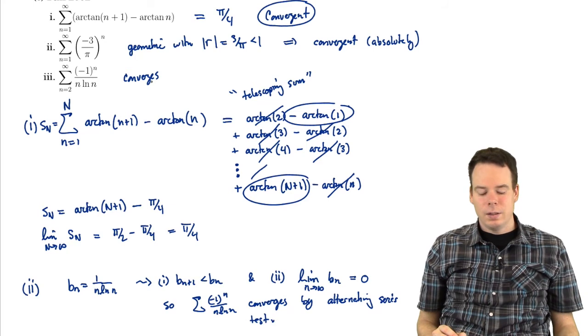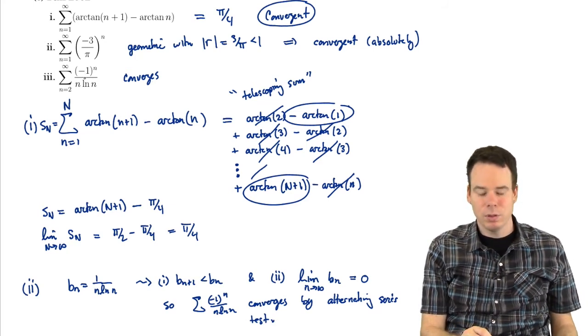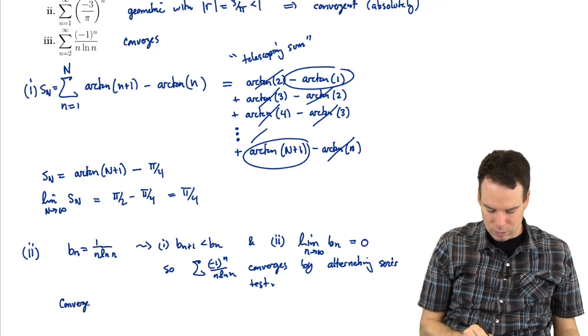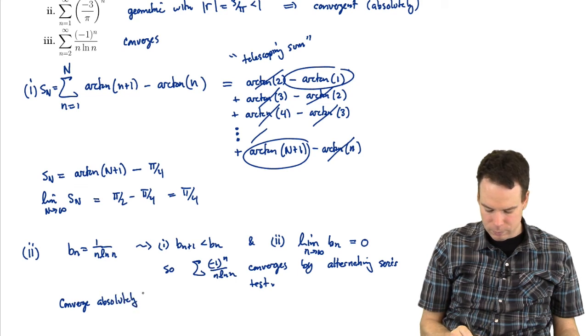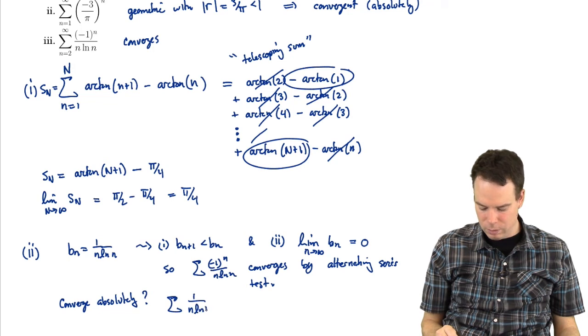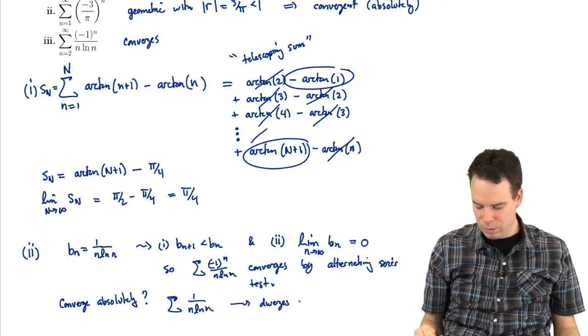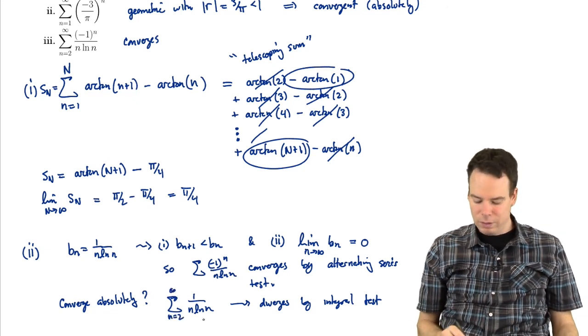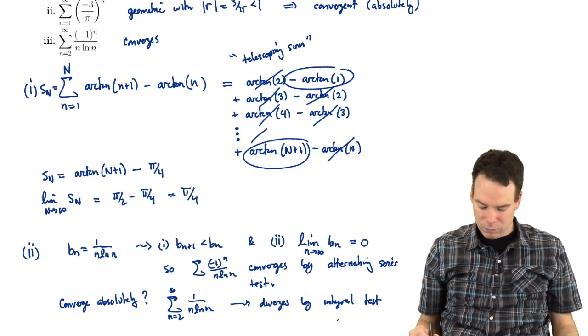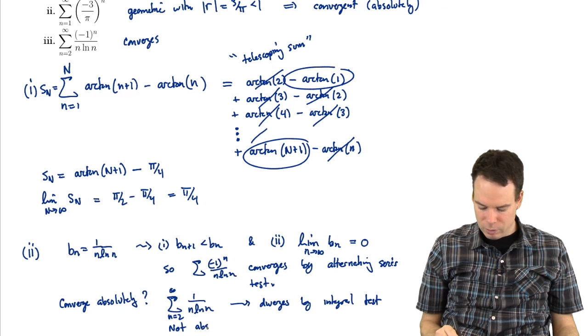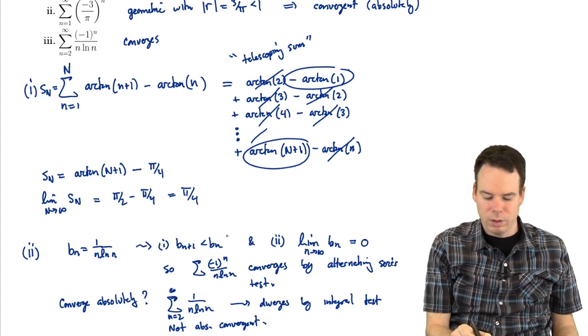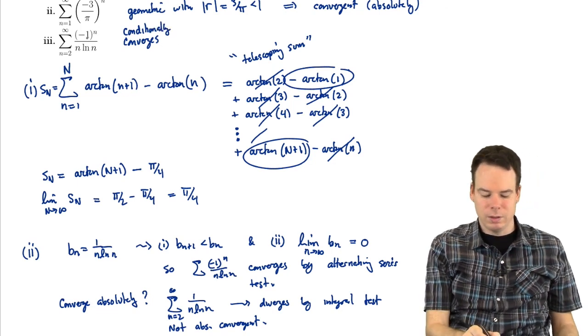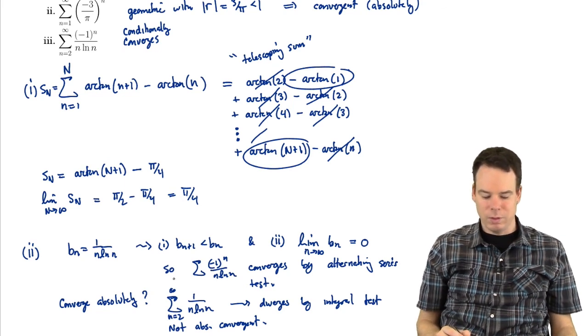Okay, so it converges. Now we want to know the answer to the deeper question. Does it converge absolutely? Well, what is the corresponding series of absolute values? So we look at the series of absolute values, 1 over n log n. And we have that this diverges by the integral test. You can check that. Take the integral as n goes from 2 to infinity. You'll see that the integral diverges, therefore the series diverges. So the series of absolute values diverges, so it is not absolutely convergent. So it converges conditionally. It converges because of the negative signs there. If you remove them, then the corresponding series of absolute values is a divergent series.